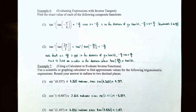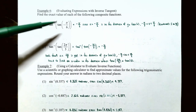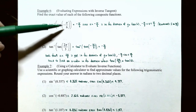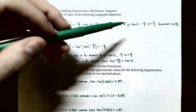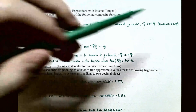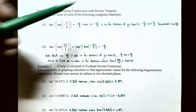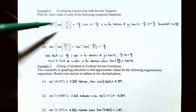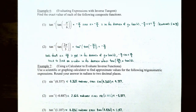Example 6: evaluating expressions with inverse tangent. Find the exact value of each composite function. Number one: inverse tangent of tangent of negative pi divided by six. Since negative pi over 6 is in the domain of the restricted tangent function — between negative pi over 2 and pi over 2, in quadrant four — the inverse tangent and tangent functions cancel each other out. The answer is simply negative pi over 6.